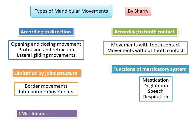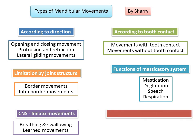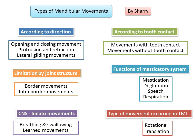The involvement of the CNS includes innate movements such as breathing and swallowing, and learned movements which are acquired through life. The types of movements occurring in the TMJ are rotational and translational. In the previous presentation we discussed border movements. Today we shall talk about intra-border movements and the movement of the TMJ, that is rotational and translational movement.